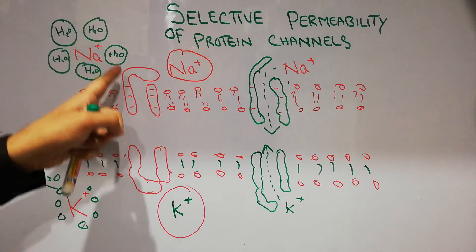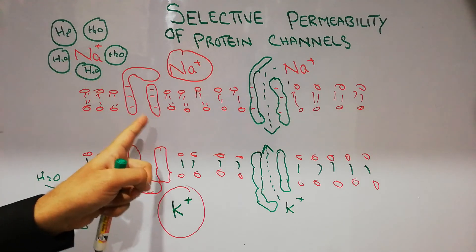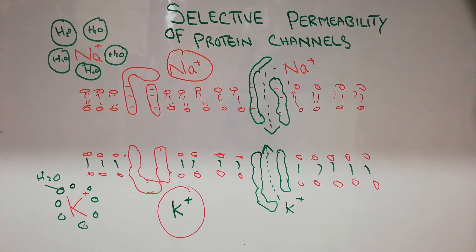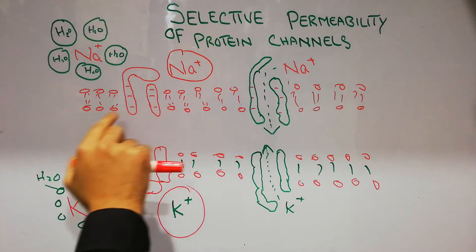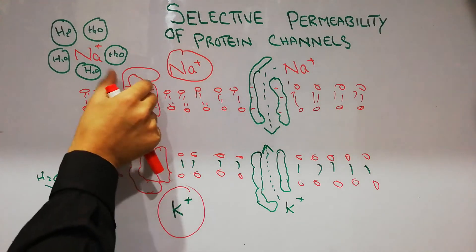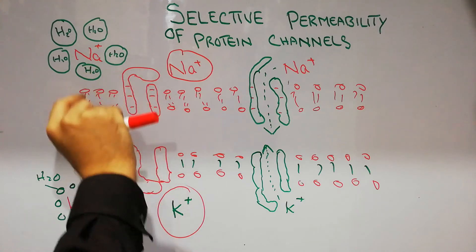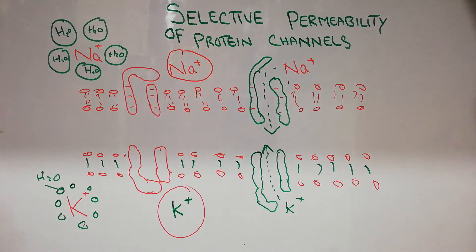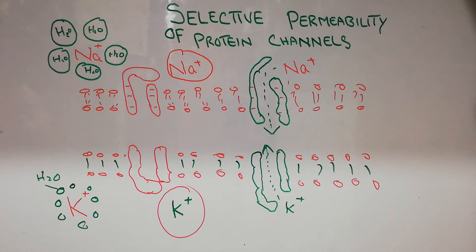Most of the time, when the inside of the cell membrane is negatively charged, the gate of the sodium channel is closed. But once the cell membrane loses its negativity on the inside, the gate mostly gets opened. How the charge is gained and lost — that's a separate story.